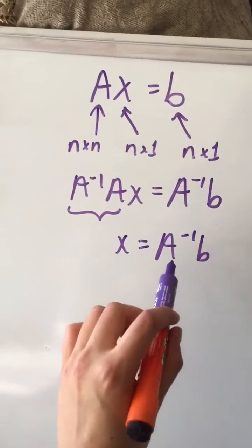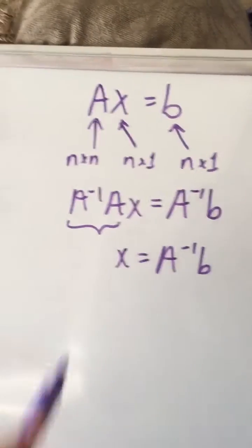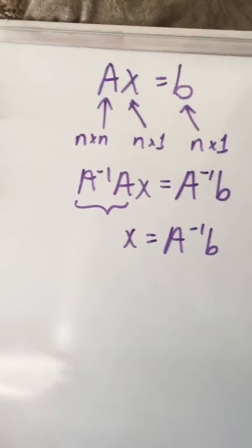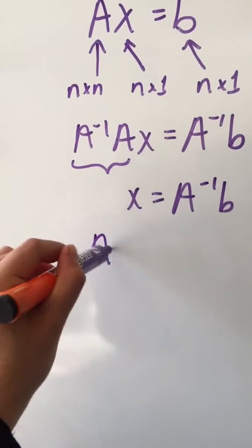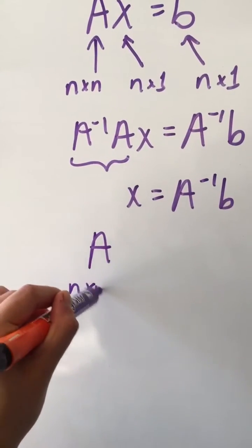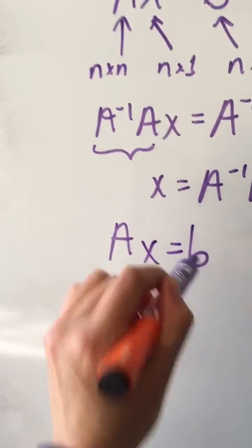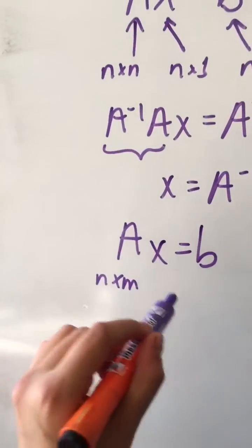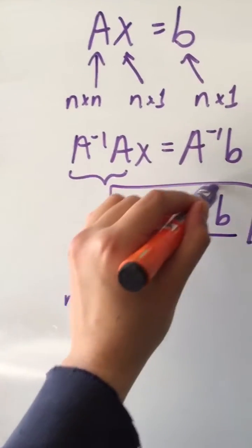And we can do this because since A is a non-singular matrix we know that it's invertible. But now let's consider the more general case where A is now an m by n matrix. We can't solve it with this equation because it's not invertible.